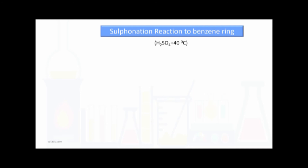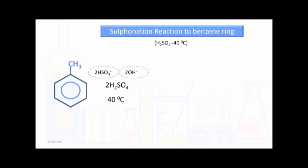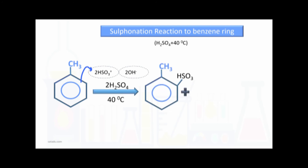The sulfonation reaction at the benzene ring: the reagent is sulfuric acid at a condition of 40°C. Under this condition, the sulfonic acid group electrophile is generated. The pi electrons of benzene are attracted towards this electrophile, giving two sulfonated products. A hydrogen ion separates and water is also produced.